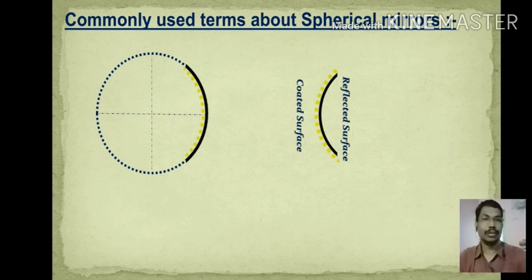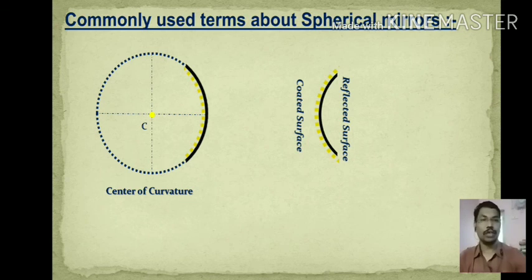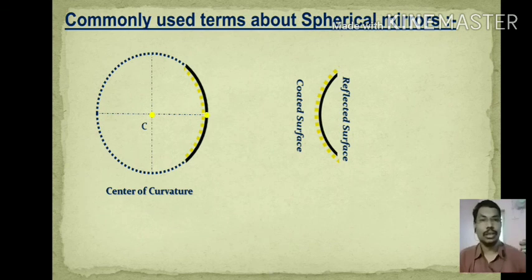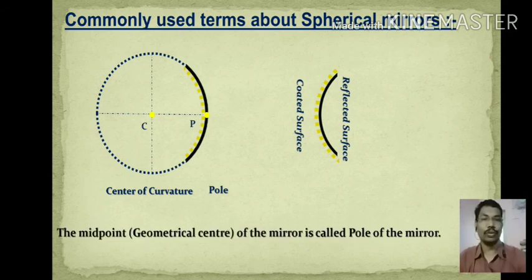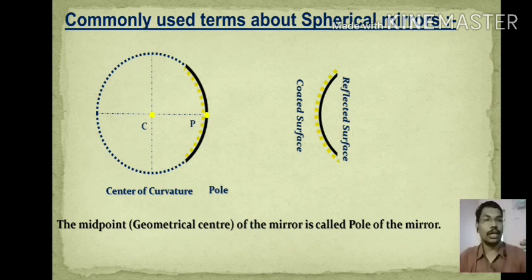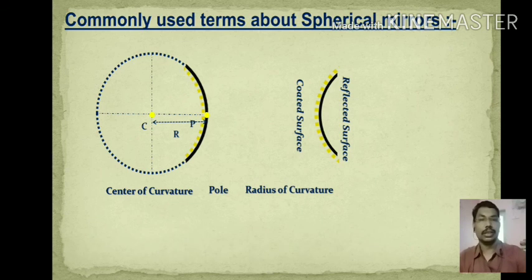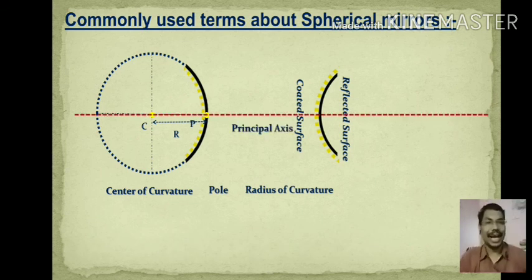Any sphere has a center, and that center for this mirror is called the center of curvature. The geometrical center or the midpoint of the mirror is called the pole of the mirror. The distance between the center of curvature and the pole is called the radius of curvature. The imaginary axis passing through the center of curvature and the pole is called the principal axis.